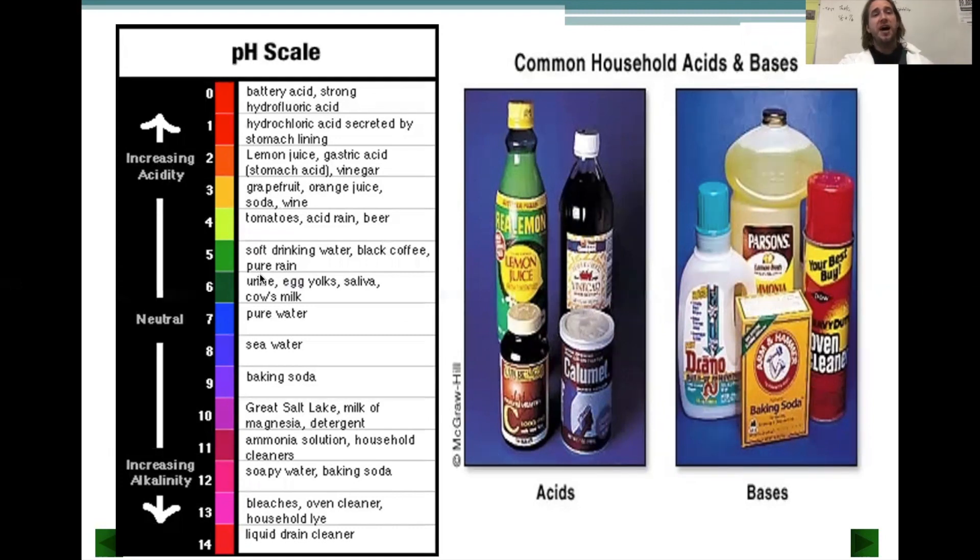We see acids in our house. Things like your drinking water or different types of juices have citric acid in them, lemon juice, your stomach acid, vinegar. These are all acids and they have a pH less than 7 on the pH scale. If you have a pH greater than 7, you're said to be alkaline or basic.